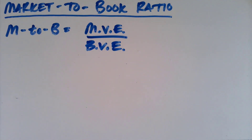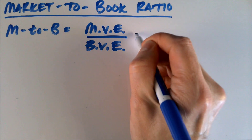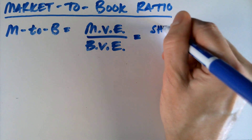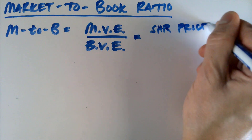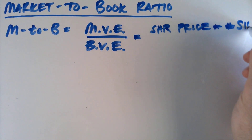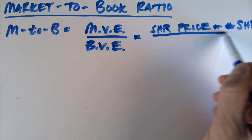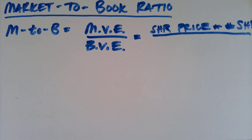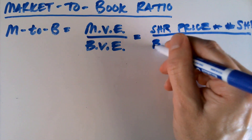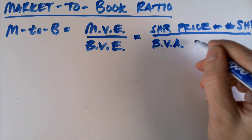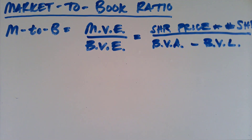The market-to-book ratio is simply the market value of the firm's outstanding stock — called market value of equity — divided by the book value of the equity. The market value of equity is the share price times the number of shares outstanding. For the book value of equity, we think back to the balance sheet equation: owner's equity equals assets minus liabilities. So we're taking the book value of assets minus the book value of liabilities. You would find these book values on the balance sheet.